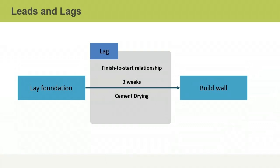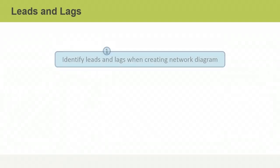A lag, on the other hand, delays a successor activity. For example, if cement must dry before the next scheduled activity can start, the finish-to-start relationship between these activities represents a lag. The technique of applying leads and lags is essentially a three-step process. First, you consider possible leads and lags in the schedule when sequencing activities — when you're creating the schedule network diagram and plotting activity dependencies and relationships.